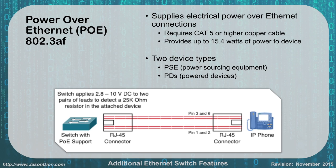Another feature is power over Ethernet, and this is the 802.3AF standard. You want to make sure you remember any of those 802.something standards — write them down. This supplies electrical power over Ethernet connections. You have to have Cat5 or above cabling to support this, and it provides 15.4 watts of power to a device. There are two different types of devices: the PSE, which is our power sourcing equipment, and PDs, or powered devices.